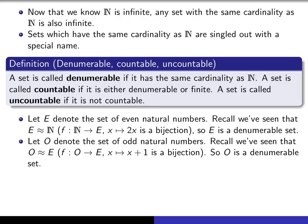So since E is denumerable, that means there's a bijection from E to ℕ, so therefore if you compose, you'll see that you get a bijection from O to ℕ, and therefore O is also a denumerable set.